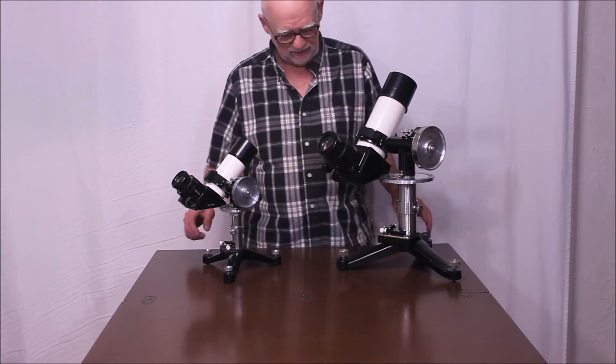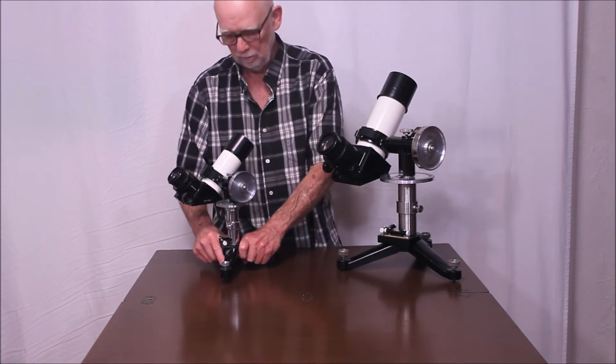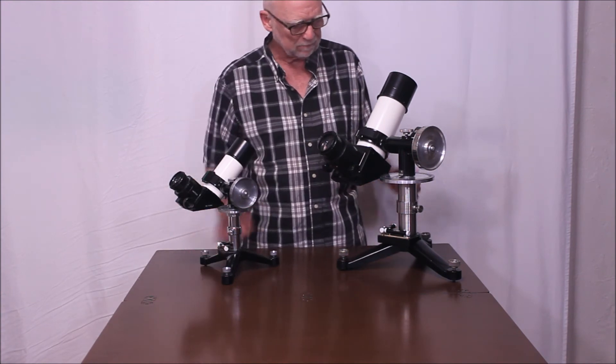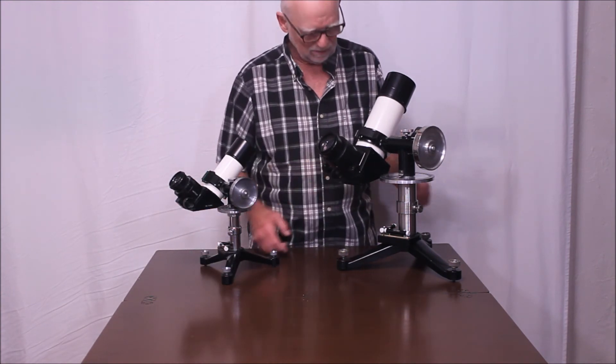So it's a pretty heavy chunk of stuff. These are heavy little beasts right here. These little 50 millimeter Unitrons. That's heavy for a little tiny scope like that. So this is really a monster.